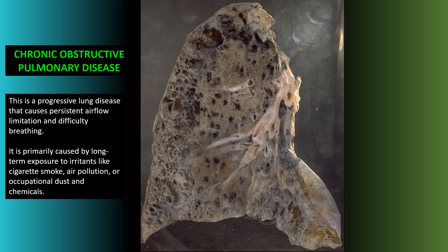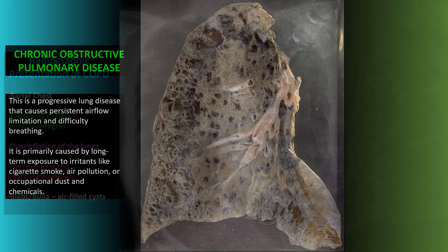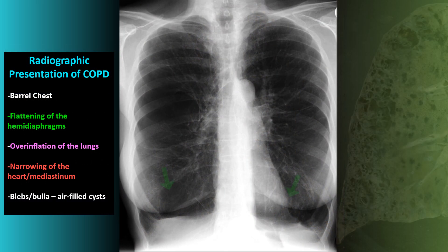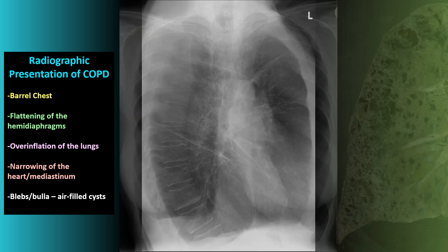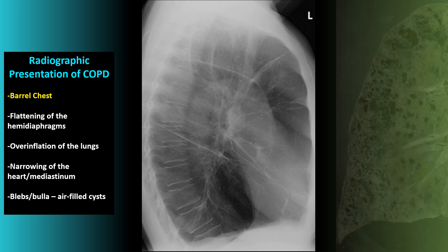Chronic obstructive pulmonary disease is a progressive lung disease that causes persistent airflow limitation and difficulty breathing, usually due to exposure to irritants like cigarette smoke or air pollution. On the frontal chest x-ray we're looking for flattening of the hemidiaphragms, overinflation of the lung fields causing narrowing of the heart and mediastinum, and visualization of air-filled bullae and cysts. On the lateral view you can often see the increased AP diameter of the chest, called a barrel chest — classically seen in patients with COPD.